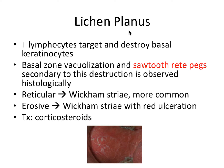Lichen planus is another very common immunologic lesion. It involves T lymphocytes targeting and destroying basal keratinocytes, and basal zone vacuolization and sawtooth rete pegs are secondary to this destruction. Sawtooth rete pegs came up in quite a few practice problems, so that's something to definitely remember about lichen planus.